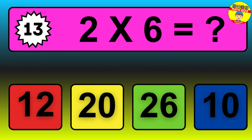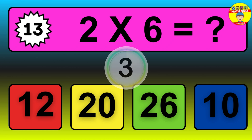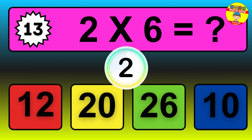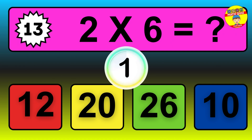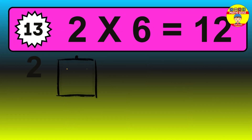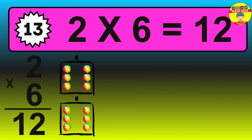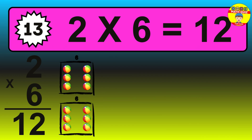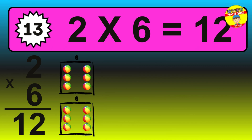Question 13. 2 times 6 equals what? The answer is 2 times 6 is 12. To calculate, we have 2 groups with 6 balls each one. So, how many balls do we have? 12 balls.